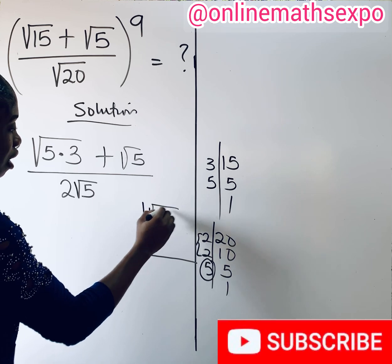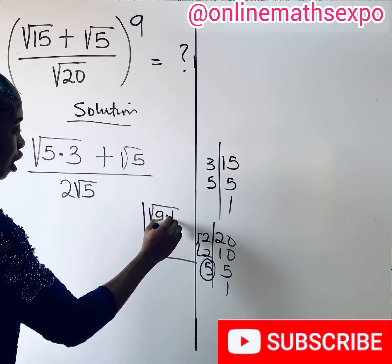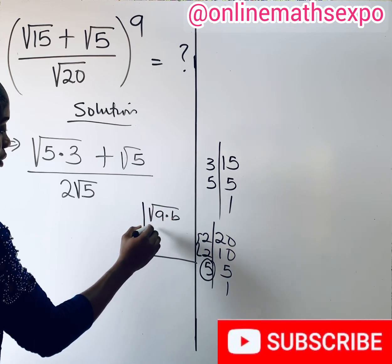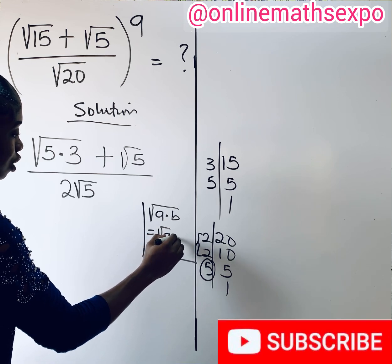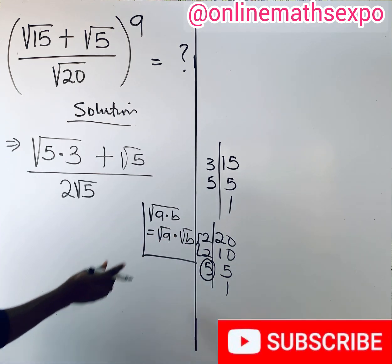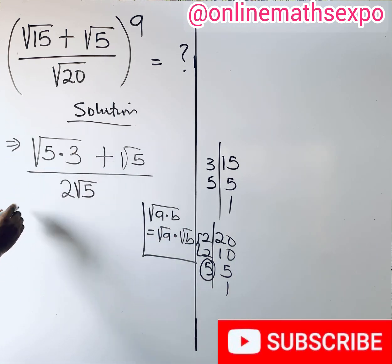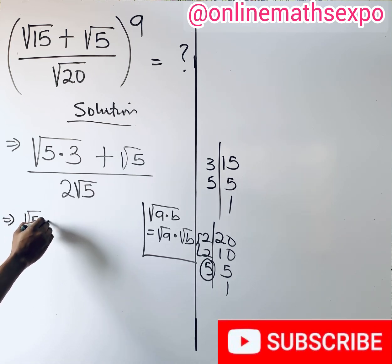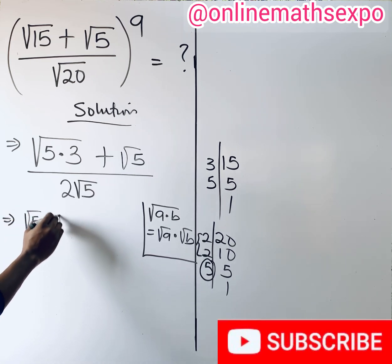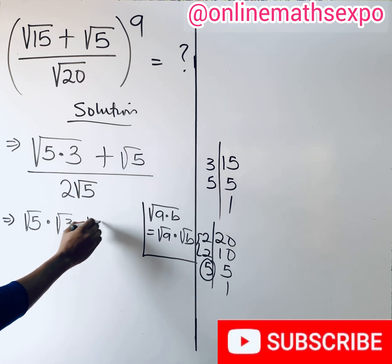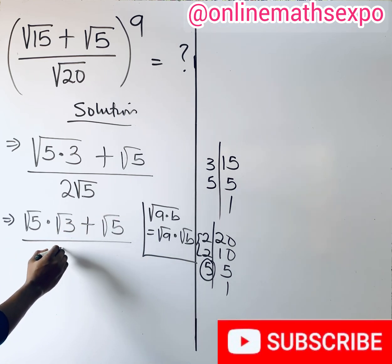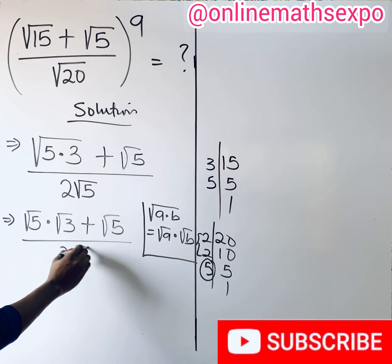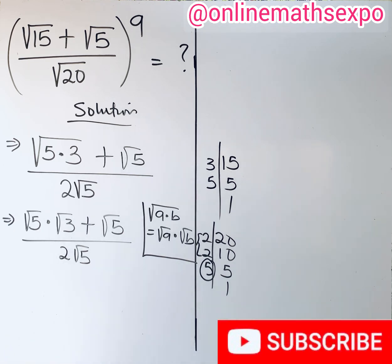Now, remember this rule of radicals: √(a × b) = √a × √b. Applying this, we have √5 × √3 plus √5, all divided by 2√5.